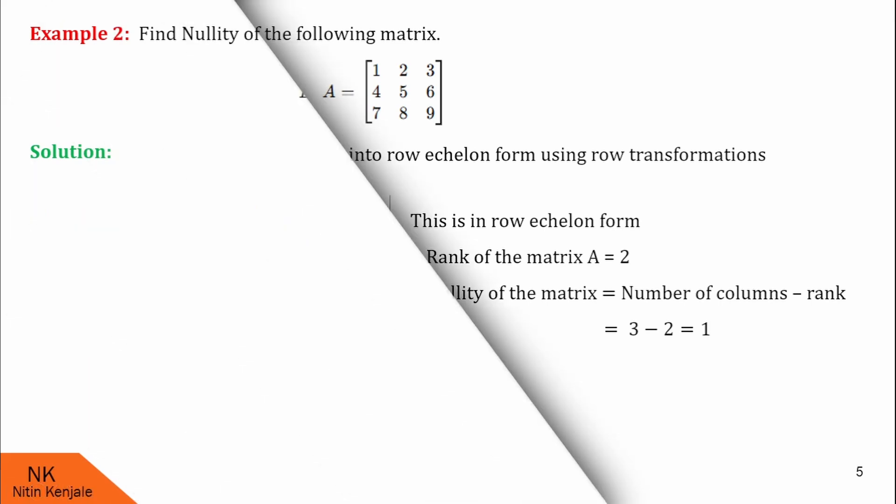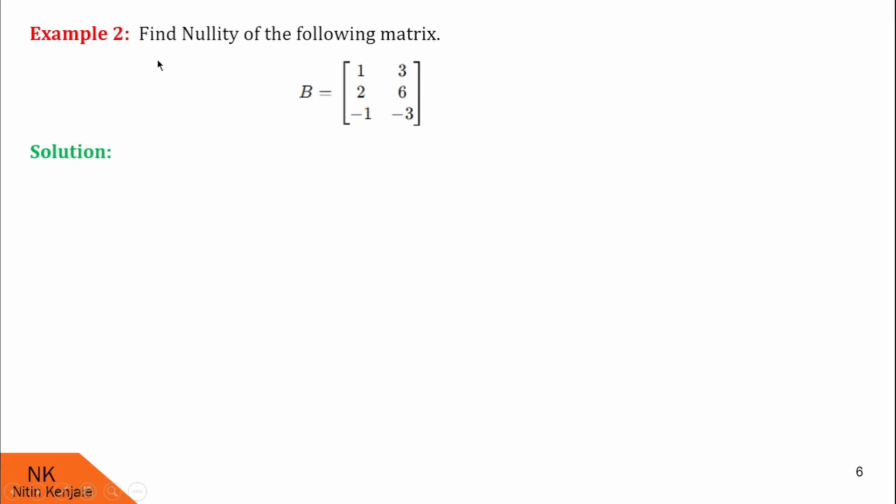Now let us proceed for next one. Here is the next example. Once again, we are asked to find the nullity of the matrix. Here, matrix B is given whose order is 3 cross 2. Therefore, number of columns are 2.